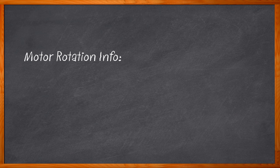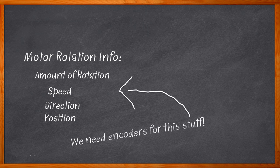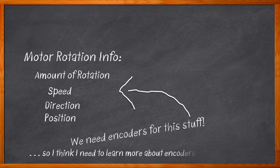Let's talk about motor rotation information. In order to get your motor running to the highest accuracy possible, you need to know four very important things: one, the amount of rotation; two, rotational speed; three, the direction of the rotation; and four, the rotational position. So you need to know all of that information. But how do you go about collecting that info? Encoders. But do you know what kind of benefits each type of encoder brings to the table — or motor, as the case may be?